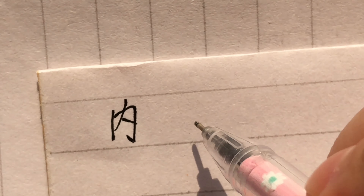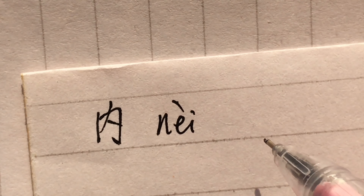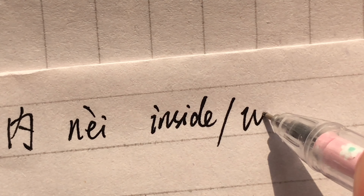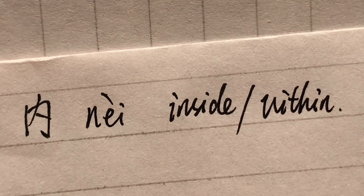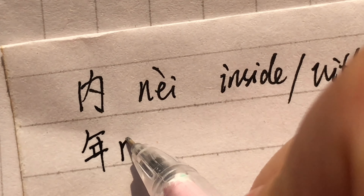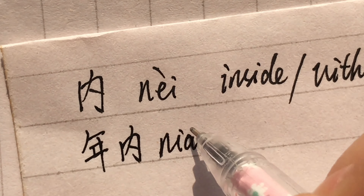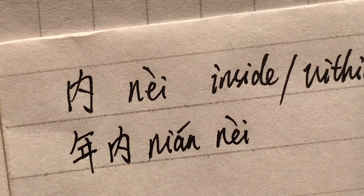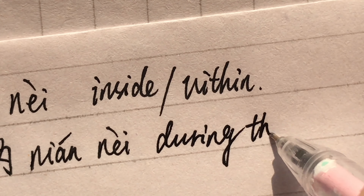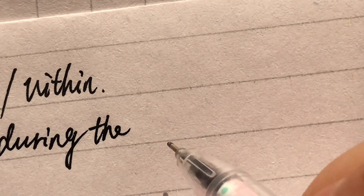Now, let's write Nei. Nei — inside, within. For example, 年内 (Nián Nèi), meaning during the current year.